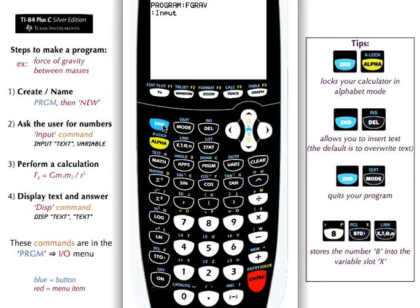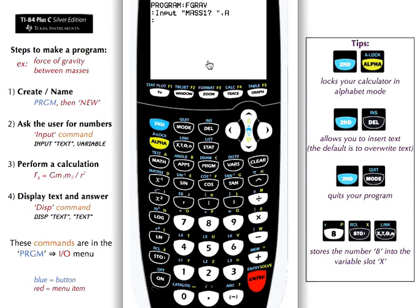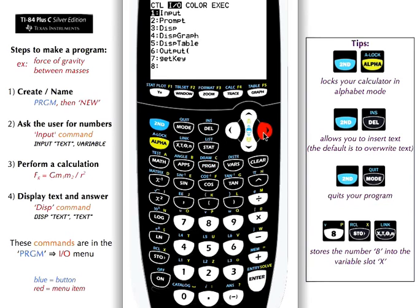How input works is it first asks for display text. I'm going to put mass 1 here first. Then it asks for a variable to store — I'm going to store mass 1 as variable A. Next, same thing but for mass 2.